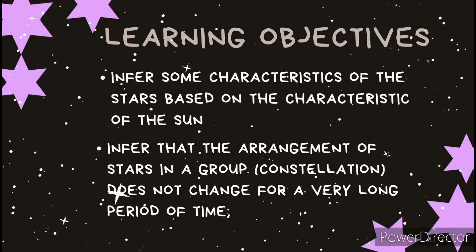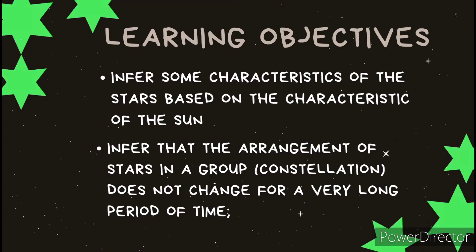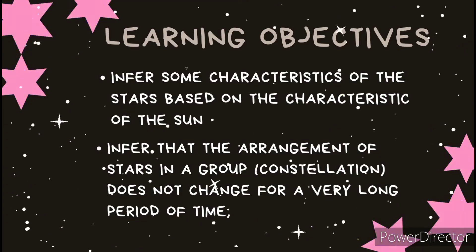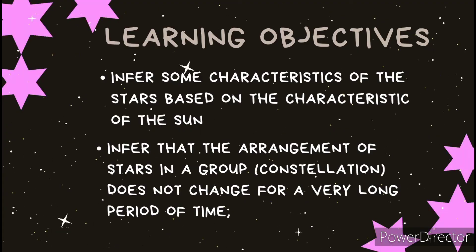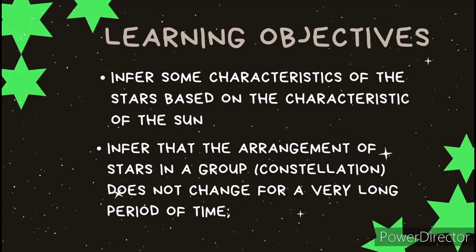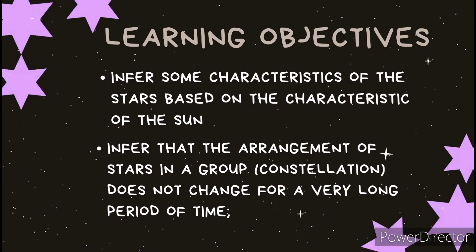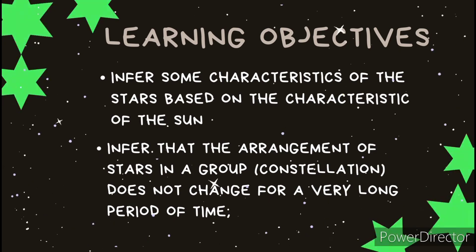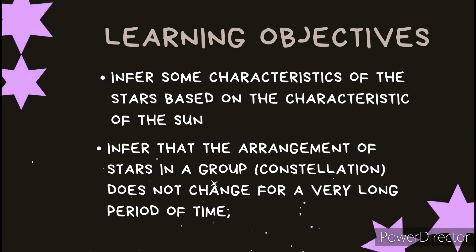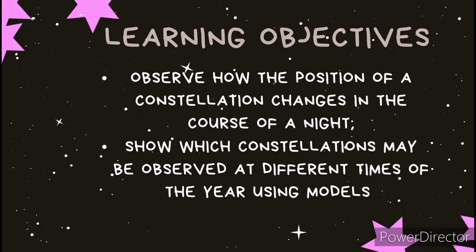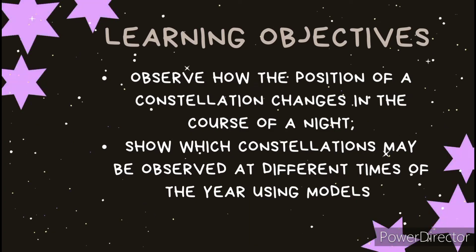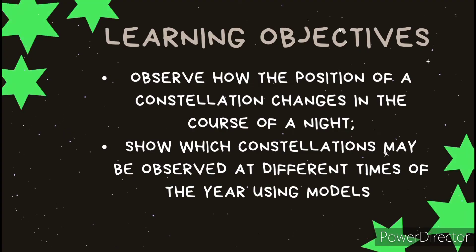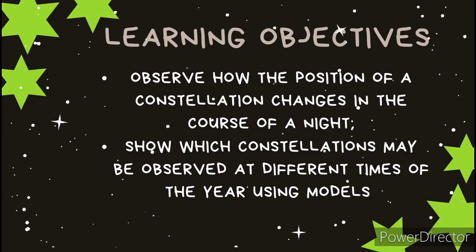Before that, let us first talk about what we are going to learn. After the discussion, you are going to infer some characteristics of the stars based on the characteristics of the sun. You may also infer that the arrangement of the stars in a group or constellation does not change for a very long period of time. You may also observe how the position of the constellation changes in the course of a night, and you may show which constellation may be observed at different times of the year using what we call globes.